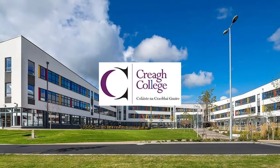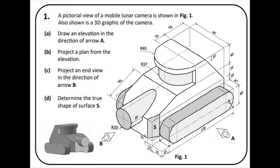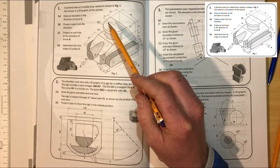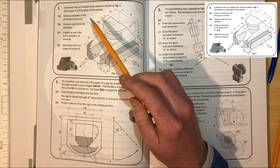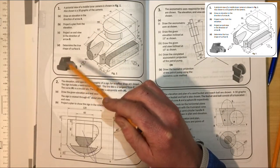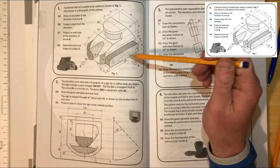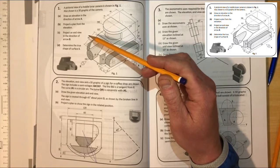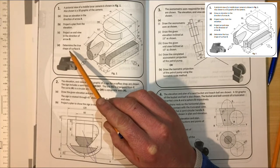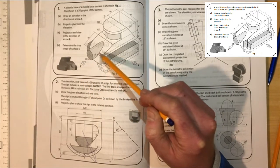Today we're going to have a look at 2019 question 1. A pictorial view of a mobile lunar camera is shown in figure 1, which is here. Also shown is the 3D graphic of the camera in the corner. We're asked to draw an elevation in the direction of arrow A, draw a plan from the elevation, project an end view in the direction of arrow B, and determine the true shape of surface S, shown here in grey.